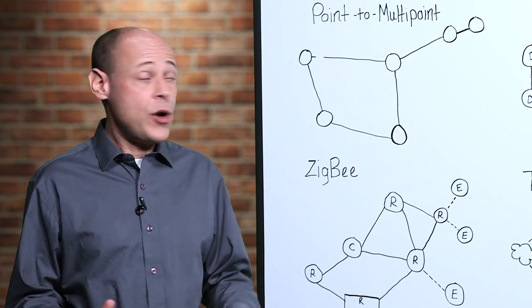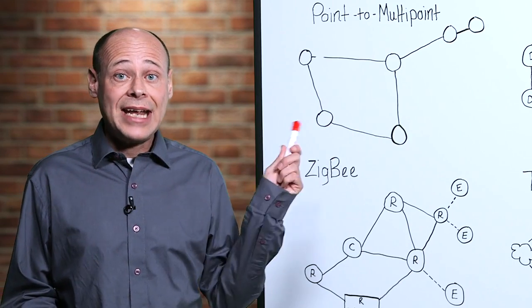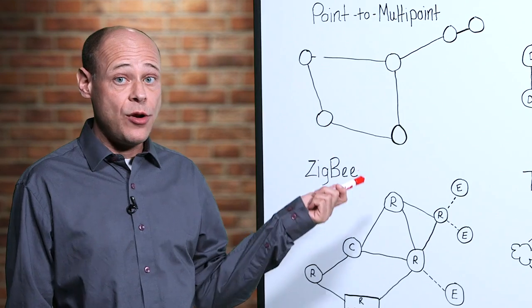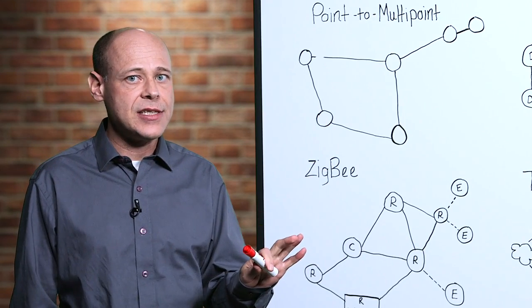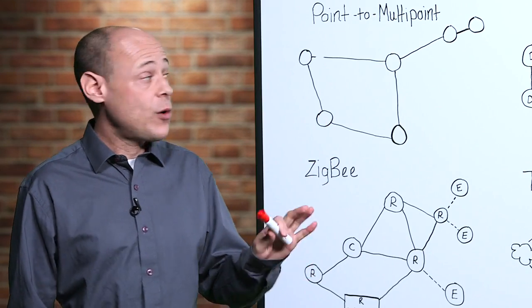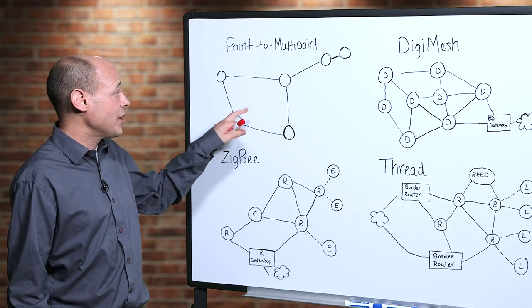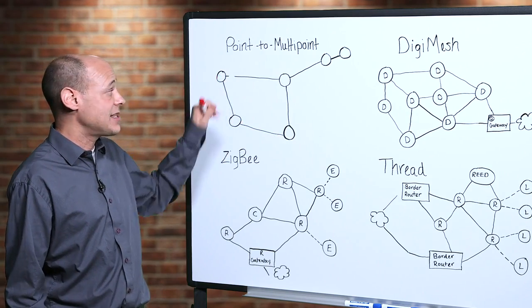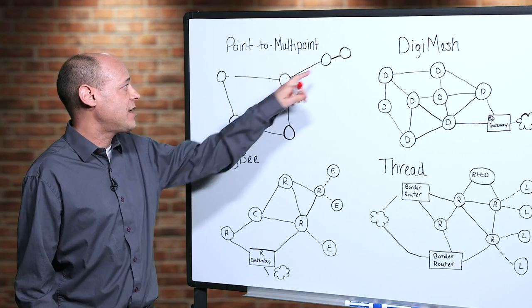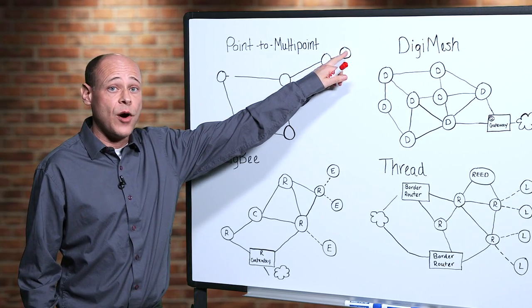In a non-mesh or point-to-point network, data can be passed between nodes that can hear each other but never to devices that are out of direct range. So for example, if this radio wants to communicate with one of its neighbors, that's no problem. But it has no way to communicate with devices that are too far away.